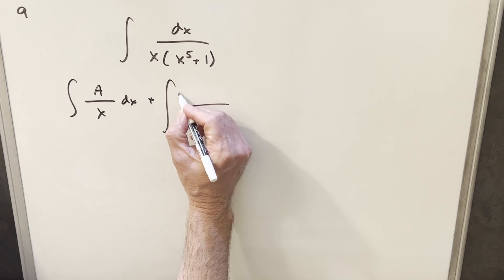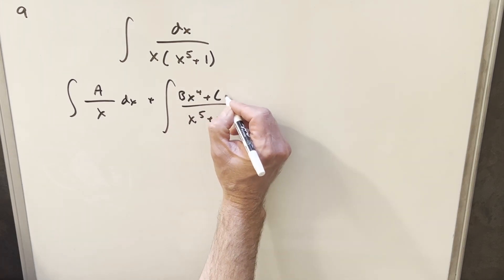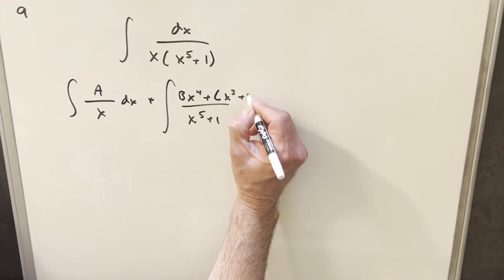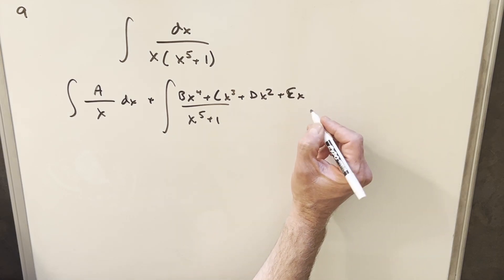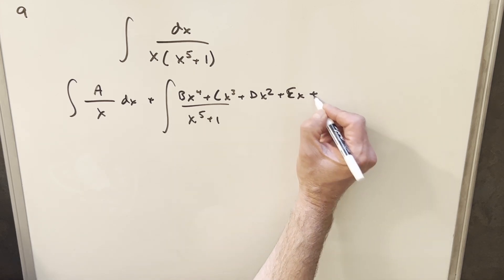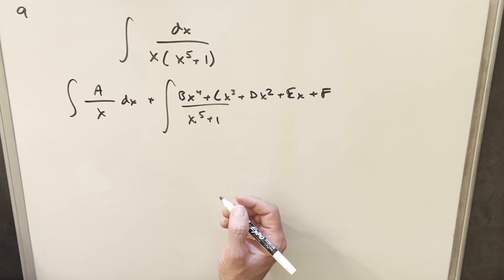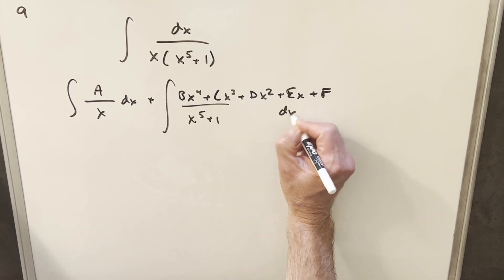So here we're going to start with fourth degree. So we'll have Bx to the fourth, Cx cubed, Dx squared, Ex. When I did this before, I forgot the alphabet. So Ex, then we'll have a plus F, and then we'll have our dx over here.